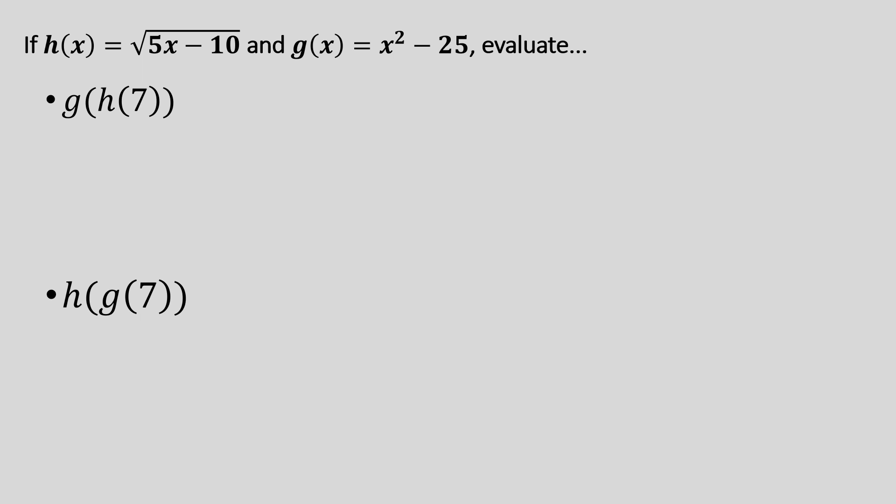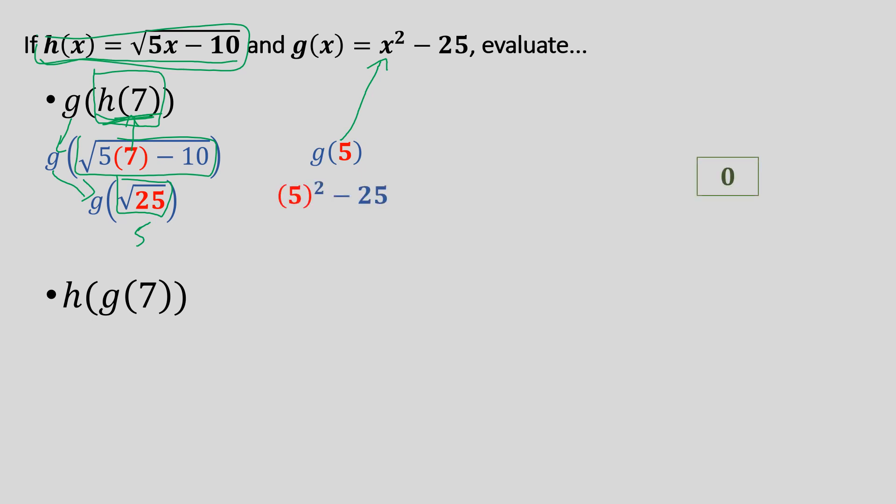One last thing to cover is you're gonna be asked to evaluate functions at certain values. So here we have two nested functions. We always want to start from the inside and move to the outside. So for g of h of seven, we want to start with the innermost function, h of seven. We're using function h, and whatever's inside our parentheses is gonna get plugged in for the x. So we're gonna plug in a seven for that x there. So five times seven minus 10. Evaluate that. We have the square root of 25, so we end up getting 25. Now this was function h from up here, but notice I kept this g on the outside. I'm just carrying that down. So this all equals five. And once we get that five, that's gonna go inside function g. So now that we have this evaluated, we take whatever we got, and we're plugging it into the x up here. Five squared minus 25, we get zero as our answer.